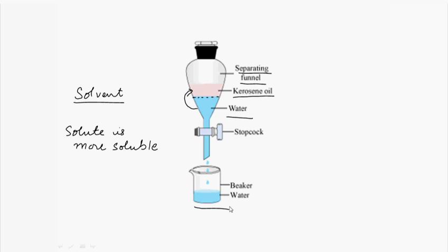We separate out the organic layer using a beaker, let the solvent evaporate, and we get the organic component. Then we add a small portion of fresh organic solvent and repeat the separation process. It is better to do repeated extractions using small portions of the solvent, as this is more efficient than using a single but larger volume. This is all according to the distribution law — the solute distributes itself between the two immiscible liquids in a constant ratio. So for effective and efficient separation, repeated extractions using small portions of kerosene oil or ether are preferred.